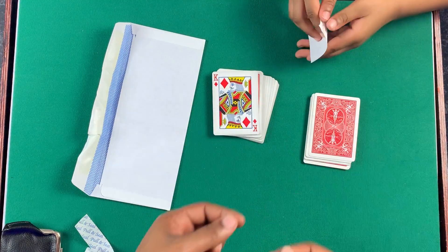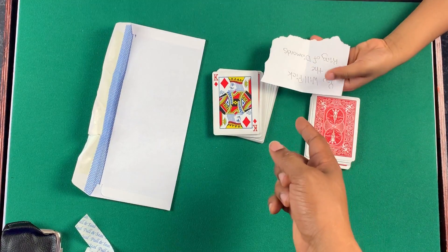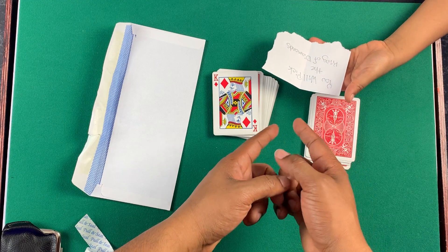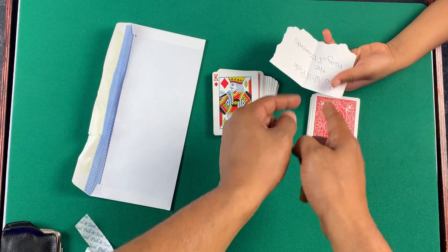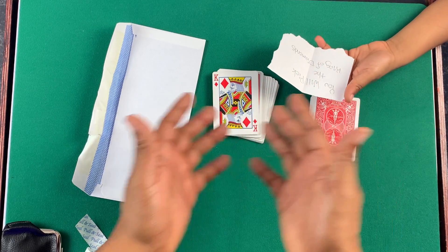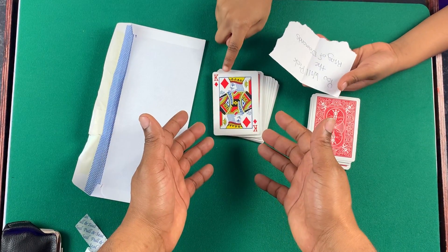And then when they open the prediction, go ahead and open it up. Though, it'll be facing them. It'll say, you will pick. Or if it's the other way around, they'll swing it around and read it. And it says, you will pick the King of Diamonds because you've already preset the King of Diamonds. So, this is the explanation for the envelope card trick.